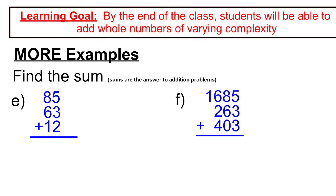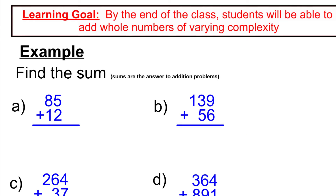We're going to go through and find the answer. Letter A is a very straightforward example. We say 5 and 2 is 7 — those are the ones places. 8 and 1 is 9. So in this case, 97 is the sum of 85 and 12. That's the pretty straightforward one.